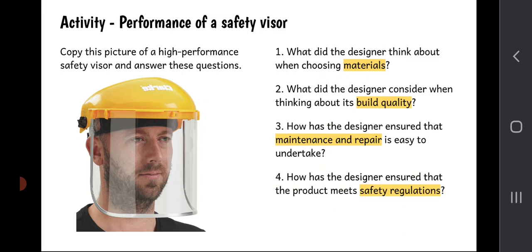Number two: what did the designer consider when thinking about its build quality? So this is a high performance safety visor. In no way is it going to fall apart when we're using it. In no way is it going to fall apart when something pings up and hits it in the visor. So how has the designer ensured that it's good build quality? What were they thinking about when they were doing that?